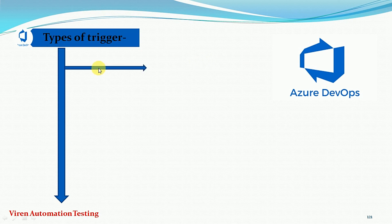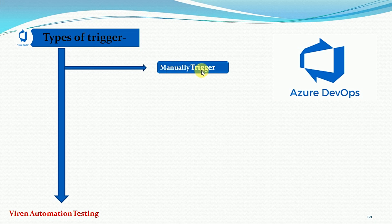The first trigger is called the manual trigger. In the manual trigger, one person is required. The person will trigger the build by clicking on the start button. If there is no person, then we cannot trigger the build. So human intervention is required when we go with the manual trigger.